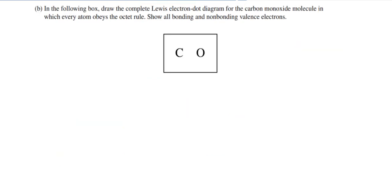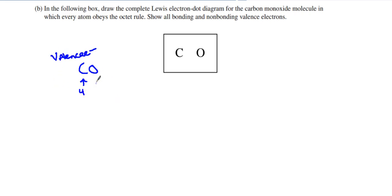Then we have a Lewis dot structure problem. Anytime I have a Lewis dot structure problem, I want my final work inside the box, which means I want some work outside the box. Carbon has four valence electrons and oxygen has six valence electrons, which adds up to ten valence electrons. Carbon is going to be my central atom, and I'm going to put an octet with a single bond on the oxygen.